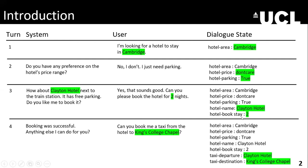The user adds they would like the hotel room for two nights, so hotel book stay is two nights. Finally, the system says 'booking successful,' and the user then asks to book a taxi from the hotel to King's College Chapel. Now the user has switched to a taxi booking task, and the dialogue state tracking system should understand that the taxi departure is from Clayton Hotel, which comes from previous turns, and the destination is King's College Chapel.